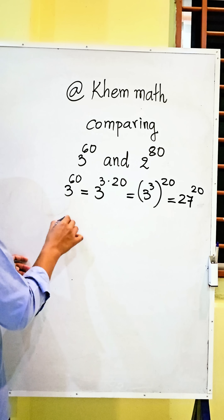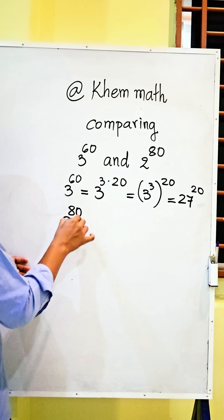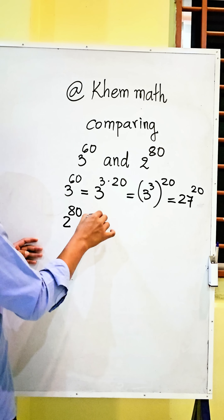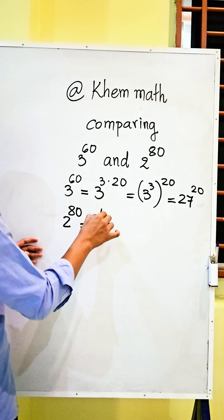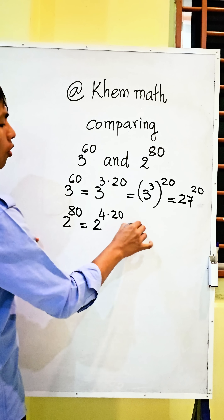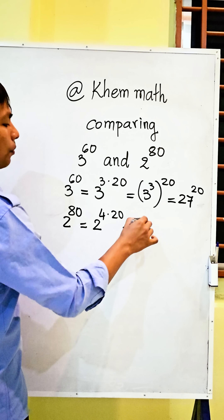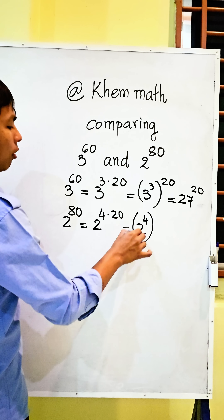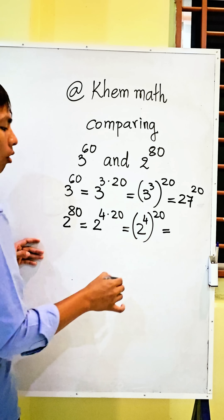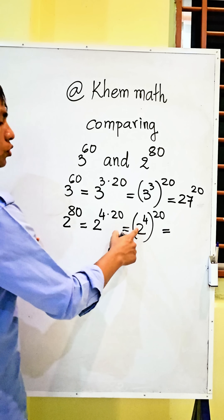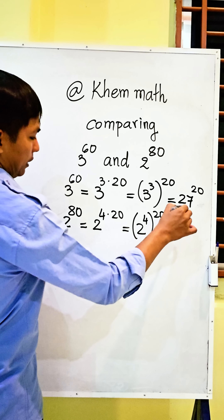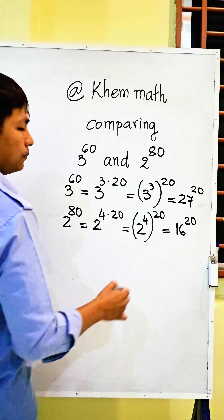And here, 2 power 80 equals 2 power 4 times 20, which equals 2 power 4, all to the power 20. And 2 power 4 equals 16, so this becomes 16 power 20.